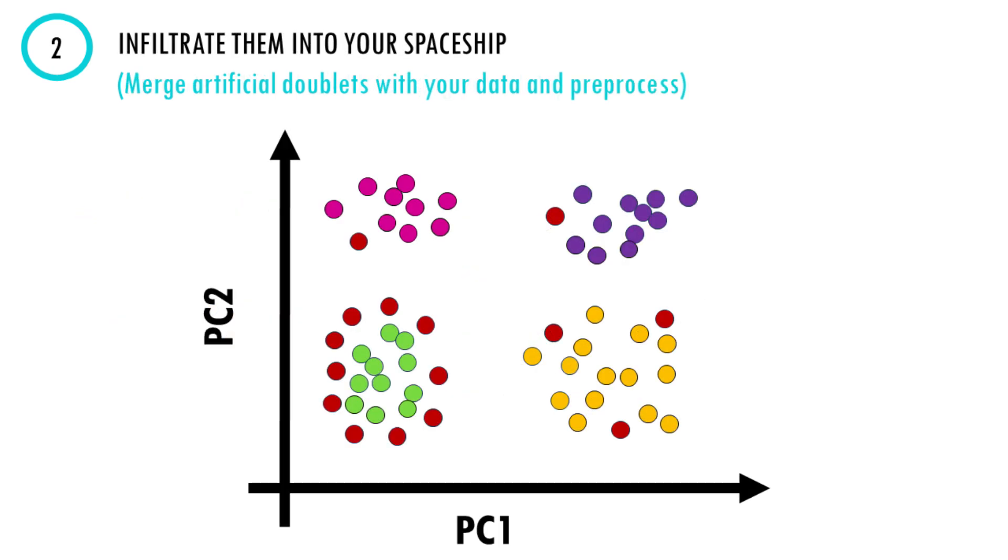In step two, it preprocesses the merged real and artificial data. That means normalizing, scaling the data, finding variably expressed genes, which we can then use to compute PCA.